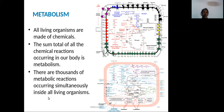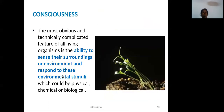The next important character of a living organism is metabolism. Metabolism consists of anabolism and catabolism. Anabolism means small molecules build up into large molecules. Catabolism means large molecules split into small molecules. Chemicals in our body like proteins, carbohydrates, and DNA all undergo chemical reactions. The sum total of all chemical reactions occurring in our body is metabolism. Thousands of metabolic reactions occur simultaneously inside all living organisms.